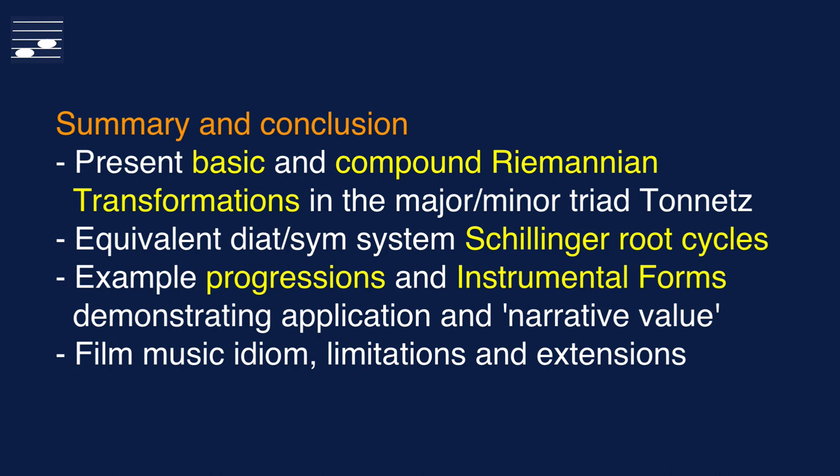Let's summarize this four-episode tutorial series on Neo-Riemannian theory. In it, I've presented the three basic and the various compound chord transformations in the major-minor triad Tonnetz diagram. We saw the mapping to the equivalent root cycles in the Schillinger diatonic and symmetric harmony system. Each transformation was demonstrated with an instrumental form example creating a realistic music cue. Compound Neo-Riemannian transformations yield chromatic medians that have narrative value in film music. This episode focused on two longer chord examples with a mix of different transformation types, that create meandering paths from the starting triad through the Tonnetz diagram, reaching remote triads on its long-winded way.